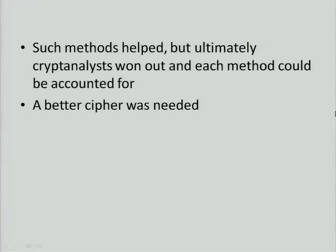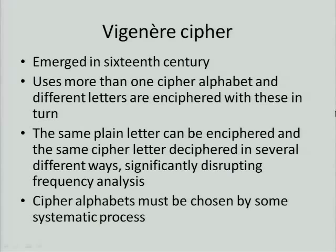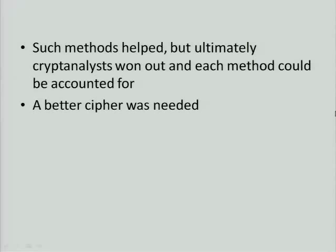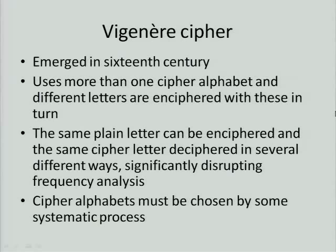In the 16th century there emerged a cipher called the Vigenère. This uses more than one cipher alphabet. Previously, our ciphers used just the one cipher alphabet. Different letters are enciphered with each of these cipher alphabets in turn, meaning the same plain letter can be enciphered — and the same cipher letter can be deciphered — in several different ways. This upsets frequency analysis.